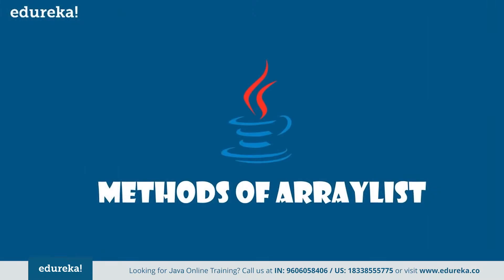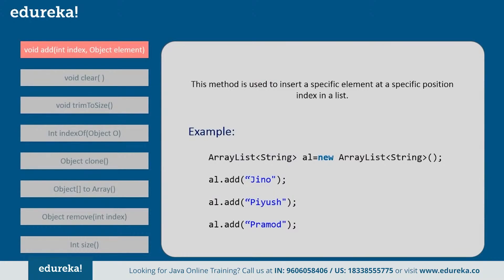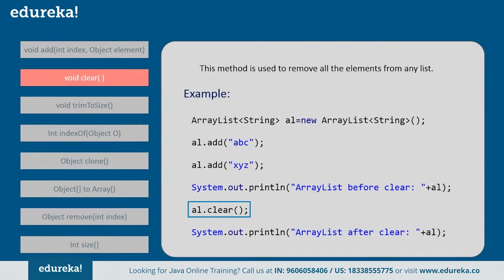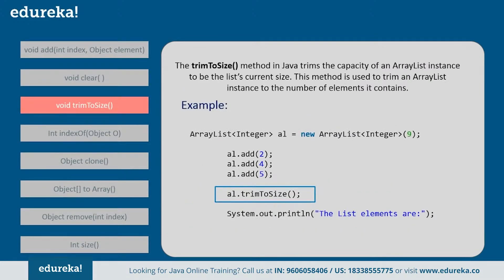Let's look at various methods supported by ArrayList. The add method inserts a specific element at a specific position index in the list. The clear method removes all elements from the list. The trimToSize method trims the capacity of an ArrayList instance to the list's current size — for example, if you create an ArrayList of size 9 but add only three elements, calling trimToSize reduces the ArrayList's size from 9 to 3, matching the actual number of elements it contains.